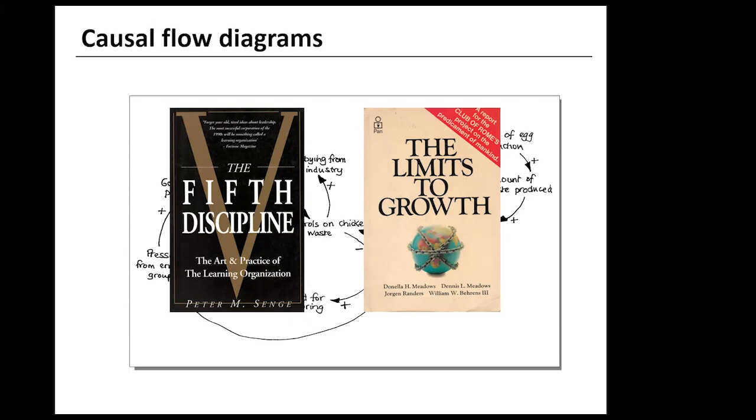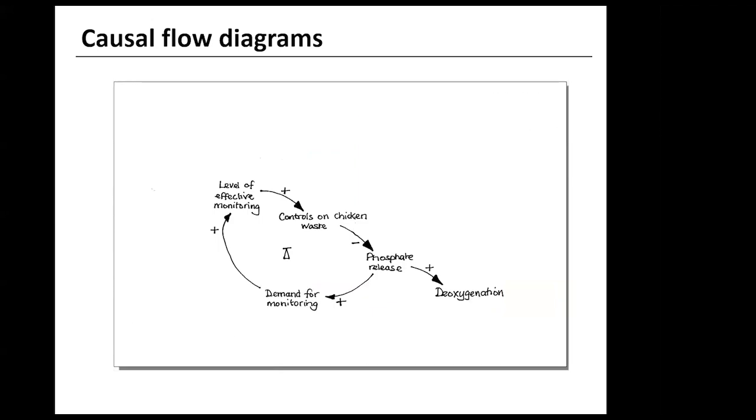But of particular importance for the environmental world was the 1971 publication of the limits to growth, which many of you will know about. This used a system dynamics approach to show how such things as population, food production, raw material availability and pollution might change over the decades and could lead to a civilisation collapse by the middle of this century. Worth reading if you've not come across it.